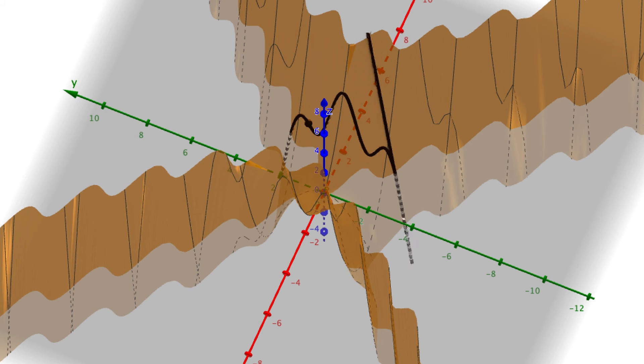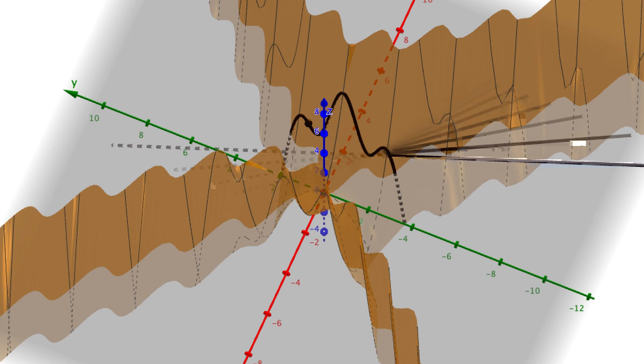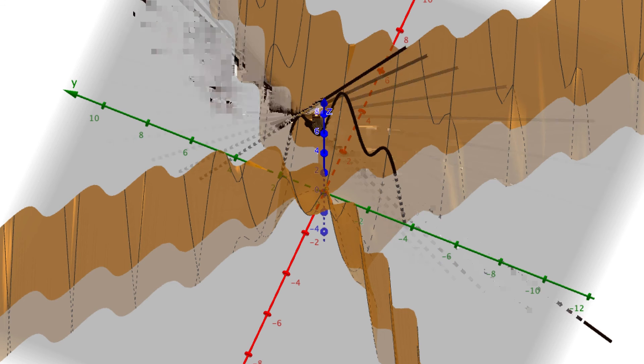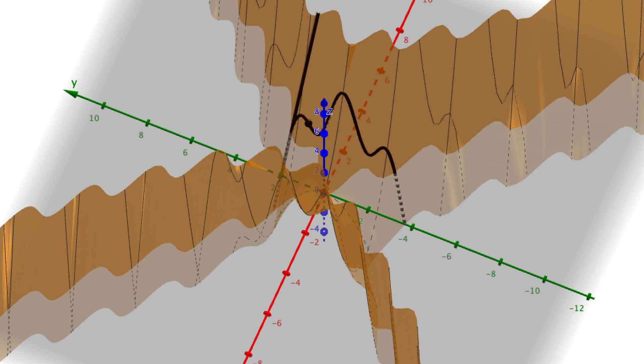The partial derivative with respect to y, or f sub y, would now be the slope of the tangent line to this new curve. The second partial derivative fyy, the second derivative with respect to y, would be the concavity of this curve.